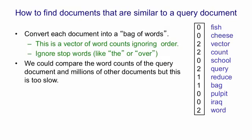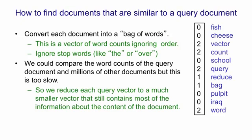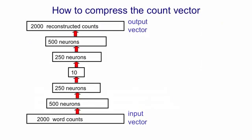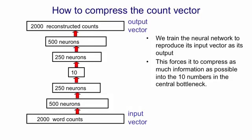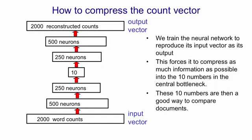We could compare the word counts of the query document with the word counts of millions of other documents, but that would involve comparing quite big vectors. In fact, we used vectors of size 2,000, so that would be slow. Alternatively, we could reduce each query vector to a much smaller vector that still contained most of the information about the content. So here's how we do the reduction: we take a deep autoencoder and compress the 2,000 word counts down to 10 real numbers, from which we can reconstruct the 2,000 word counts, although we can't reconstruct them very well. We train the neural network to reproduce its input vector at its output as well as possible, and that forces it to put as much information about the input into those 10 numbers as possible. We can then compare documents using just 10 numbers, which is going to be much faster.